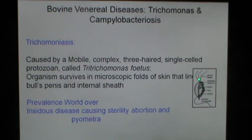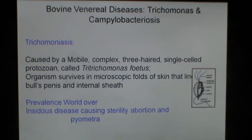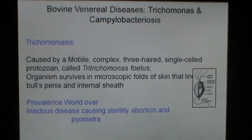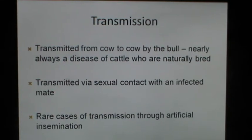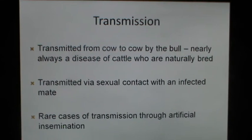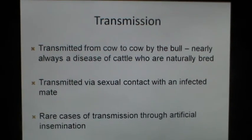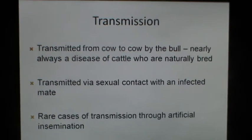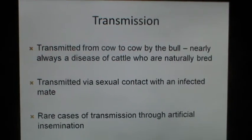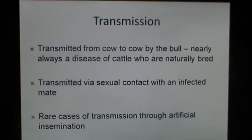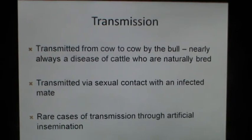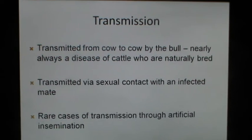Tritrichomonas fetus is a three-flagella flagellate organism which is highly motile. The transmission of Trichomoniasis is from cow to cow by the bull — nearly always a disease of cattle who are naturally bred, transmitted by sexual contact with an infected mate. Rare cases of transmission through artificial insemination are on record. Trichomonas can survive minus 196 degrees centigrade, so bulls must be tested for Trichomoniasis.